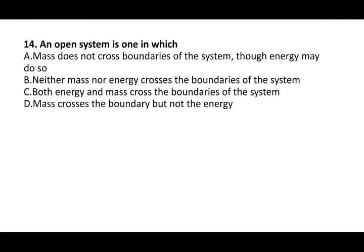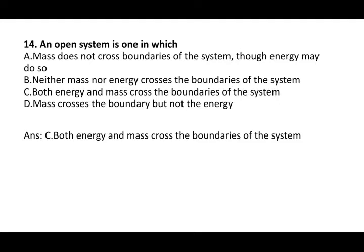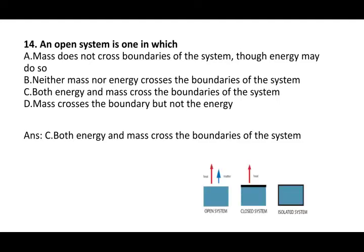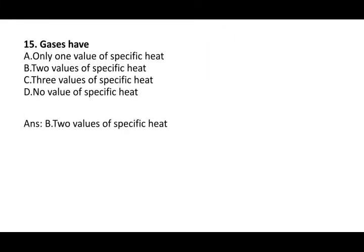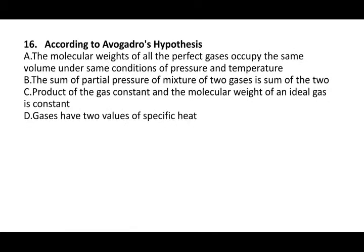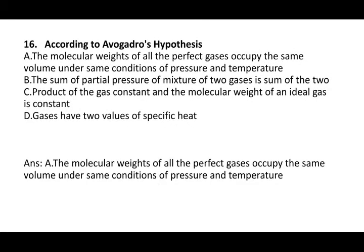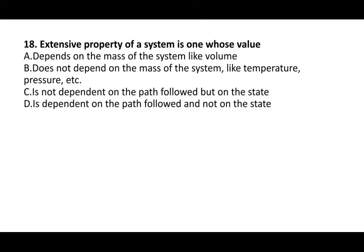An open system is one in which both energy and mass cross the boundaries of the system. Next question: gases have two values of specific heat — specific heat at constant volume and specific heat at constant pressure. According to Avogadro's hypothesis, the molecular weight of all perfect gases occupies the same volume under the same conditions of pressure and temperature. Work done in a free expansion process is zero. An extensive property of a system is one whose value depends on the mass of the system, like volume.